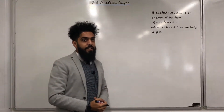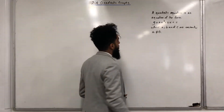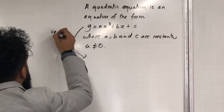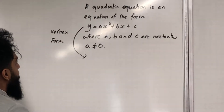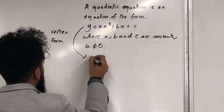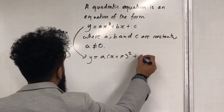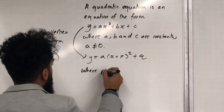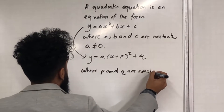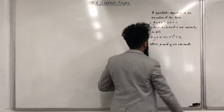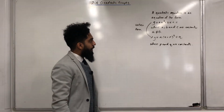This particular quadratic equation can be expressed in vertex form. The vertex form of this quadratic is y = a(x + p)² + q, where p and q are constants. The way we get the vertex form is to complete the square on this quadratic.